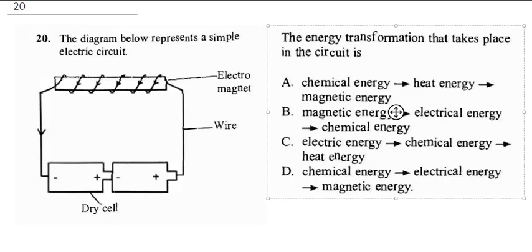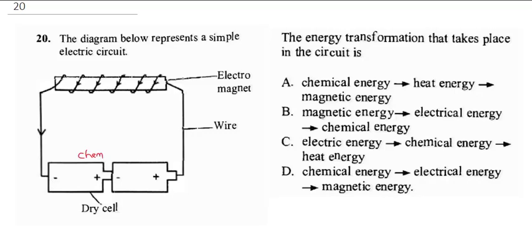Question 20 involves a simple electric circuit and asks about the energy transformation. The battery generates chemical energy, which produces electricity that moves through the wire — this is electrical energy. The wire connects to a magnetic bar forming electromagnets, creating magnetic energy. So the transformation goes from chemical energy to electrical energy to magnetic energy. The correct answer is D. Options B and C are wrong answers.